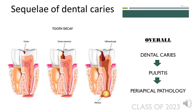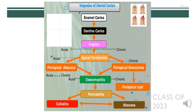If pulpitis is not treated and left unresolved, it can move to the periapical area and result in any of the periapical pathologies. Before understanding pulpitis or diseases of the pulp, we should be able to describe the sequelae of dental caries. Dental caries is not just a cavity of the tooth — if left untreated it can have serious implications and even lead to life-threatening conditions like osteomyelitis and cellulitis. The earlier dental caries is treated, the better the prognosis for the patient, and also the less the cost of treatment.